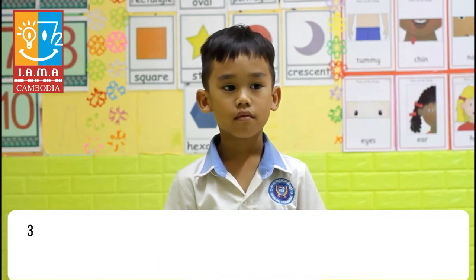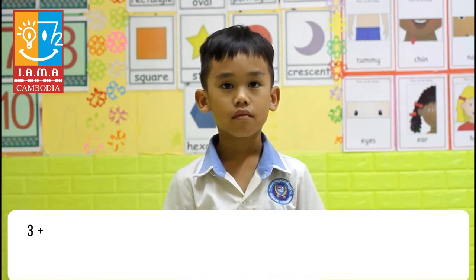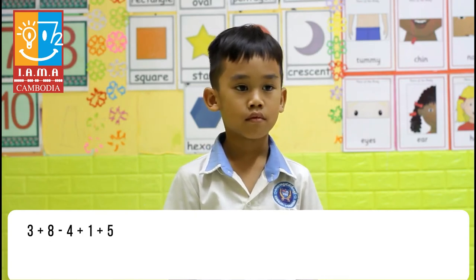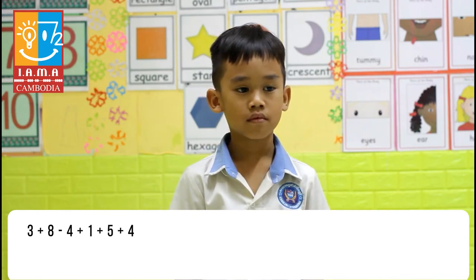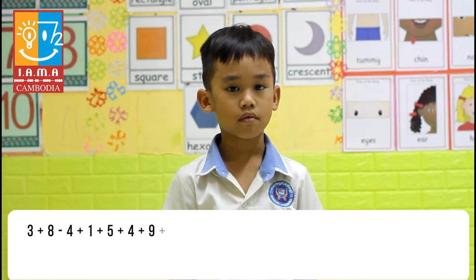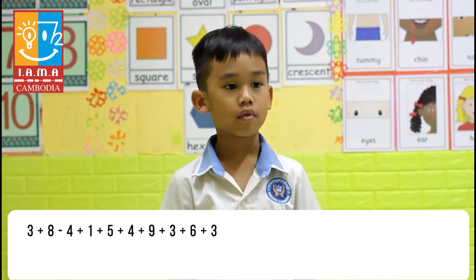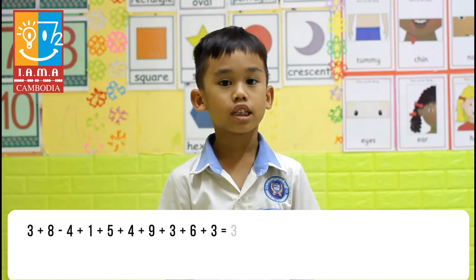Okay, let's time. 3 plus 8 minus 4 plus 1, 5, 4, 9, 3, 6, 3. What is the answer? 38.